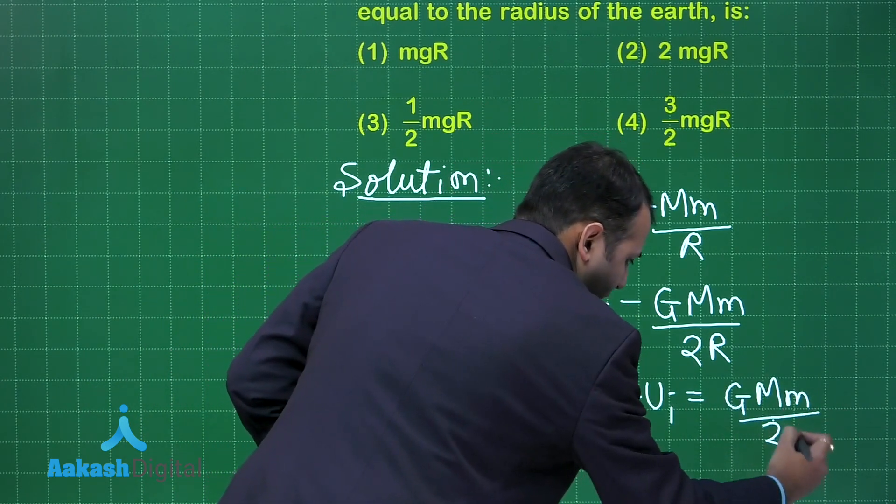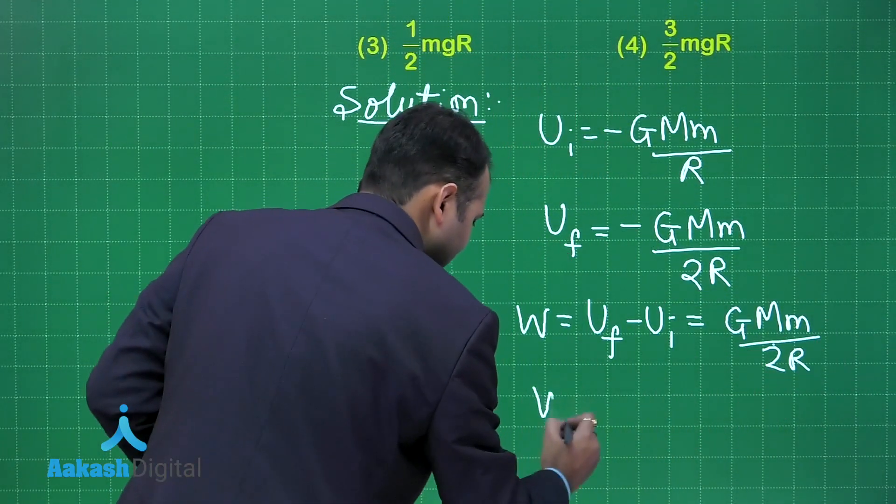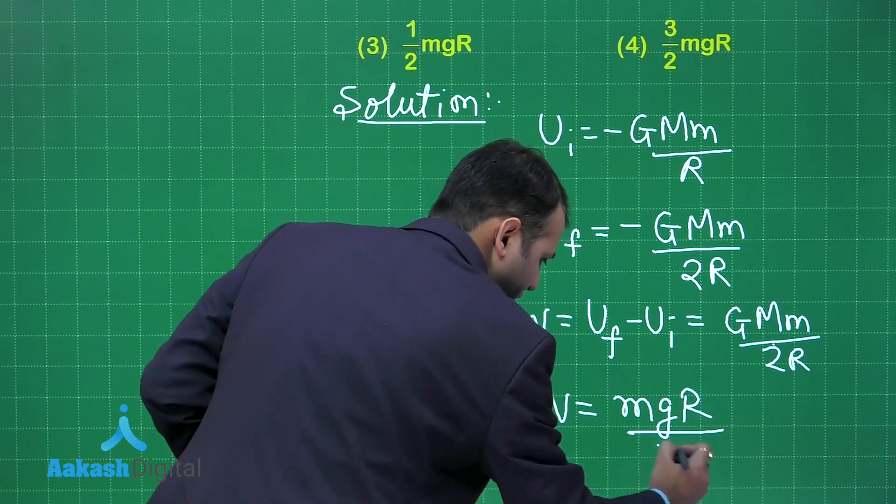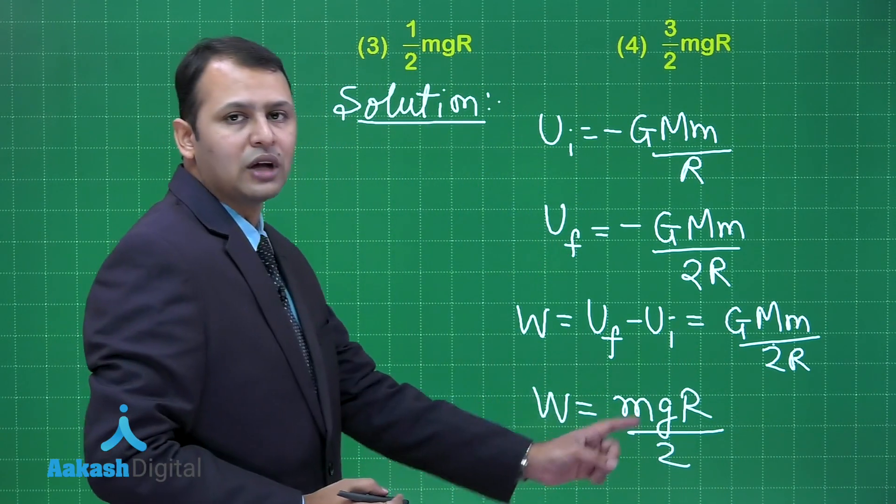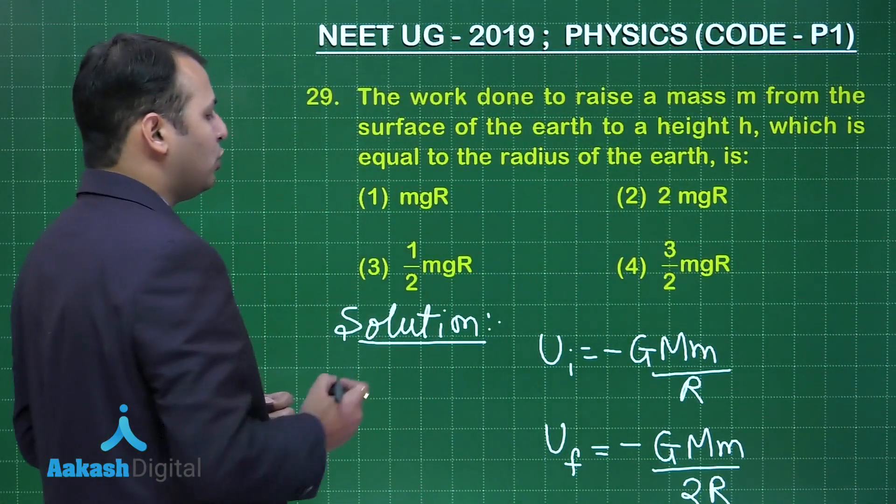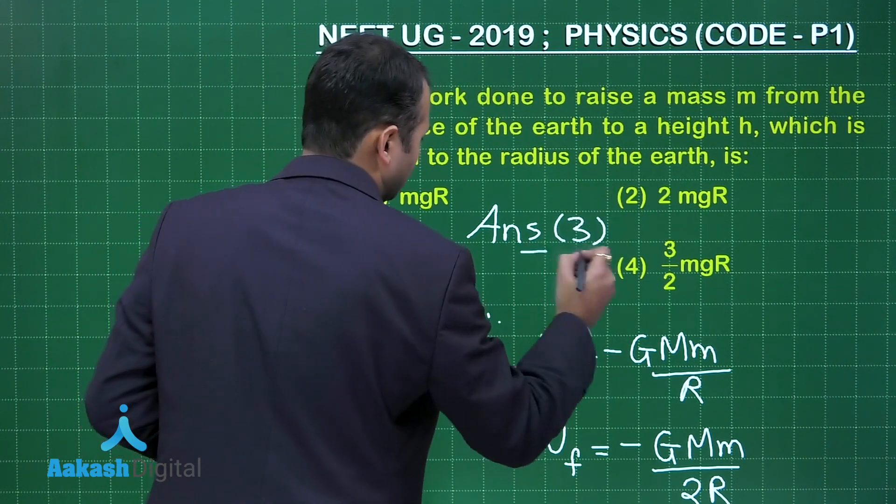Now here you very well know that this can be written as mgR/2 as g equals GM/R². So let's see which is the best suited option among the four given options. Option number 3 would be the right answer to this question.